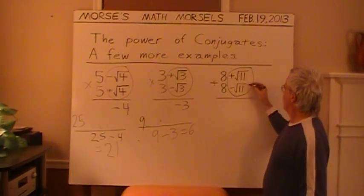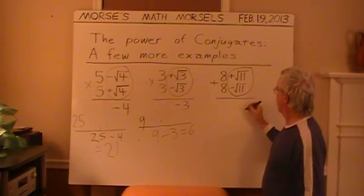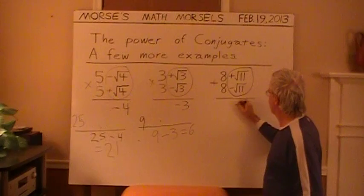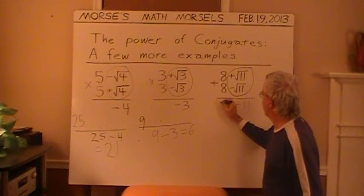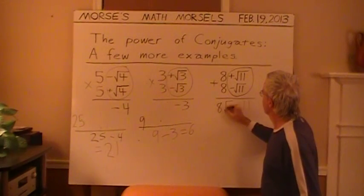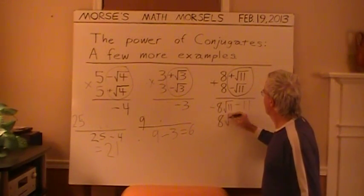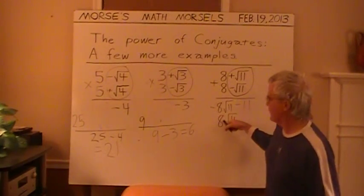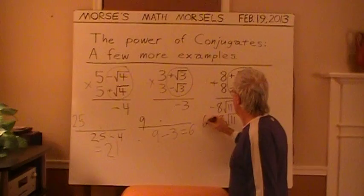Last example. Square root of 11 times negative square root of 11, that's just minus 11. Negative square root of 11 times 8. And the other will be, as you predicted, the positive 8 times the square root of 11. Then our 8 times 8.